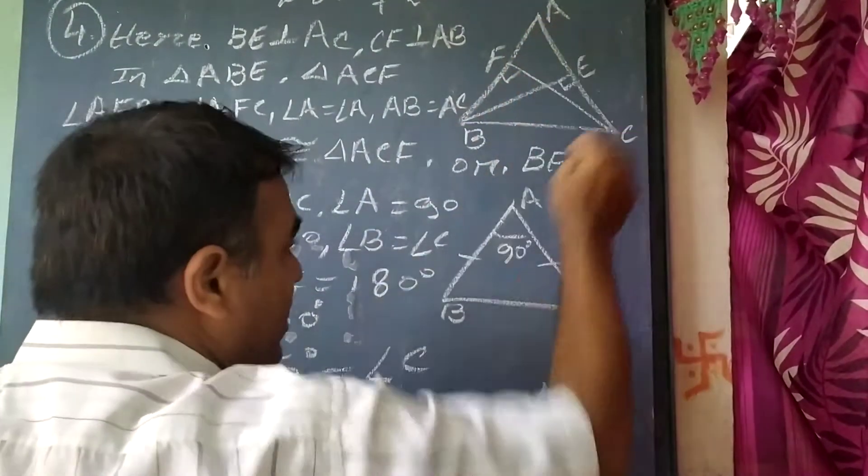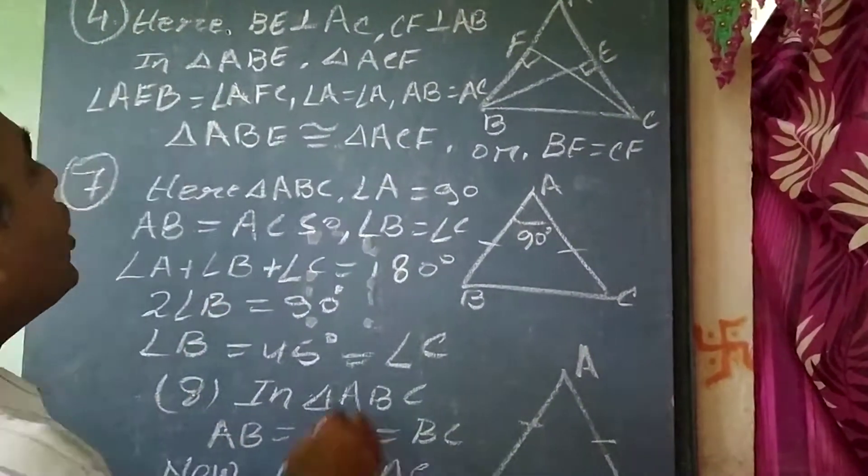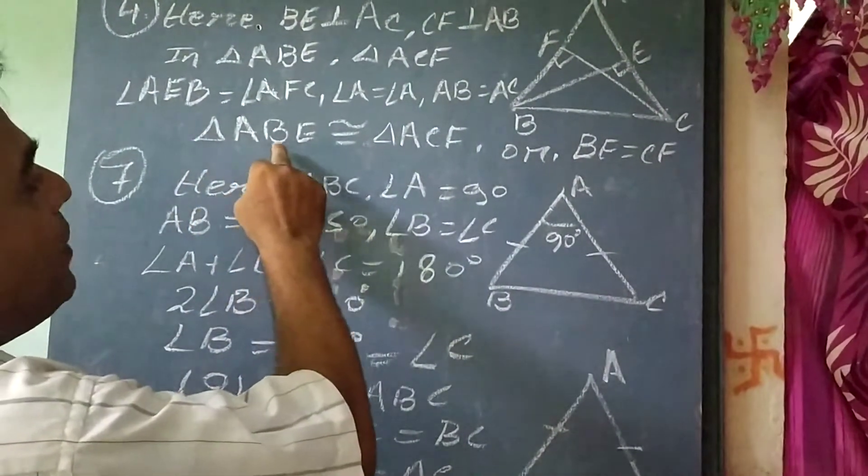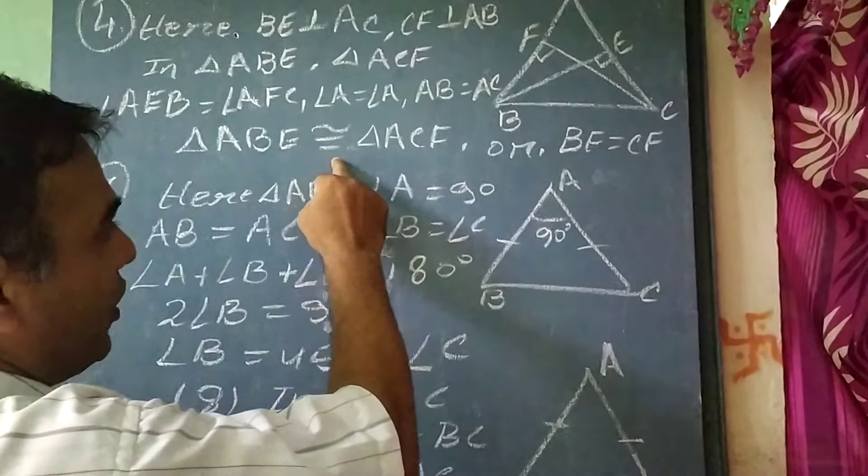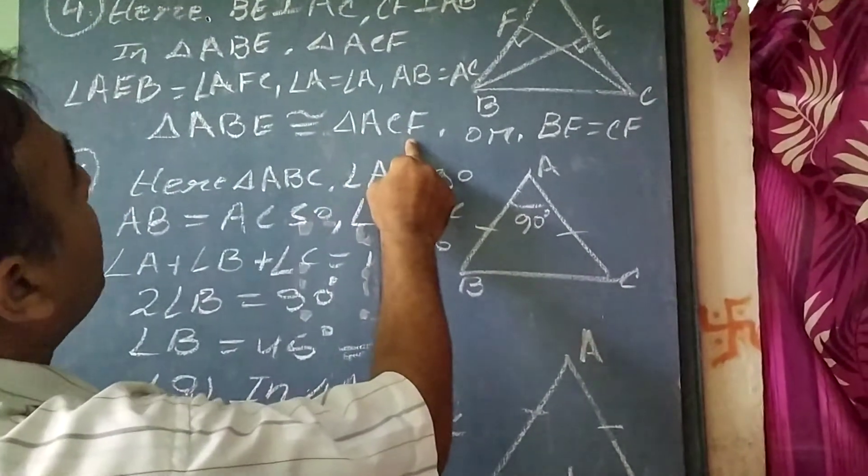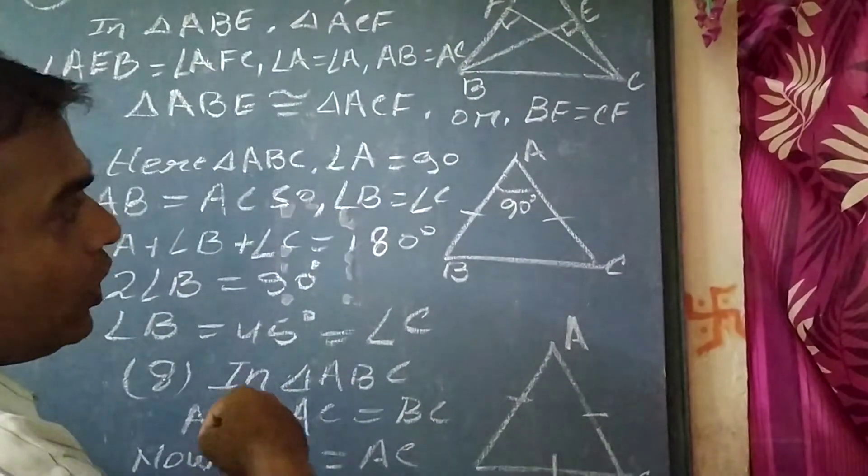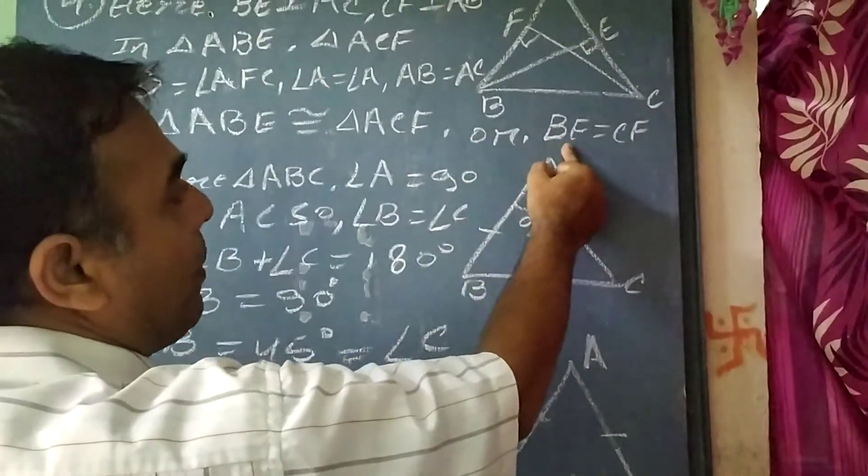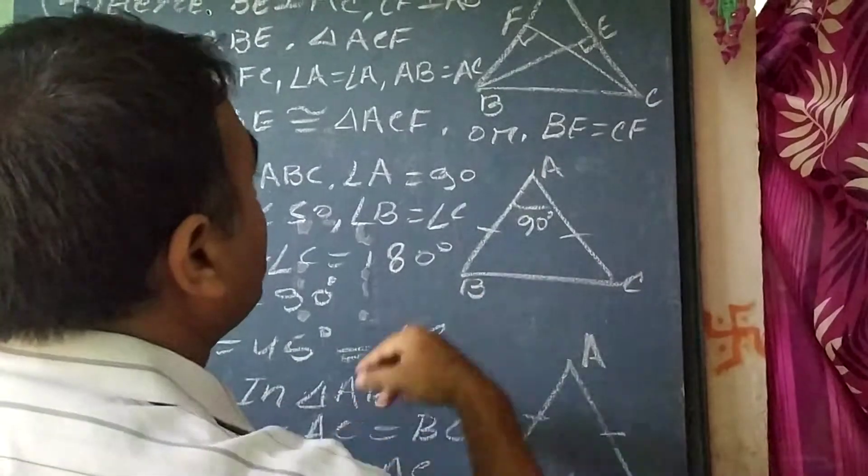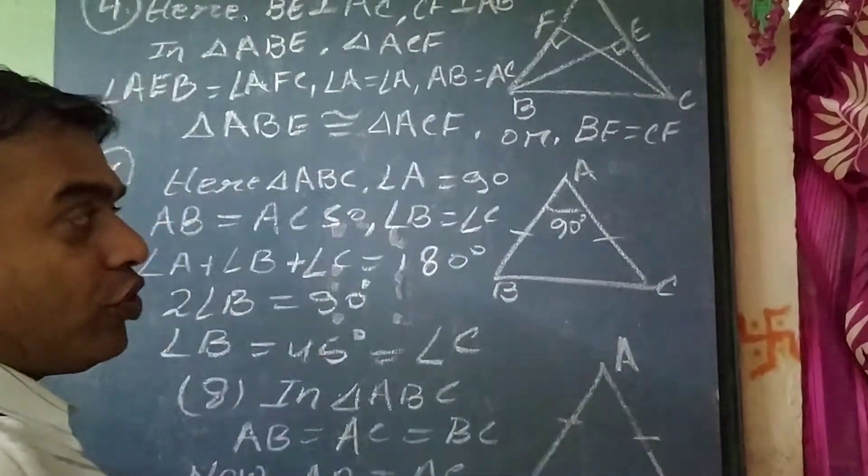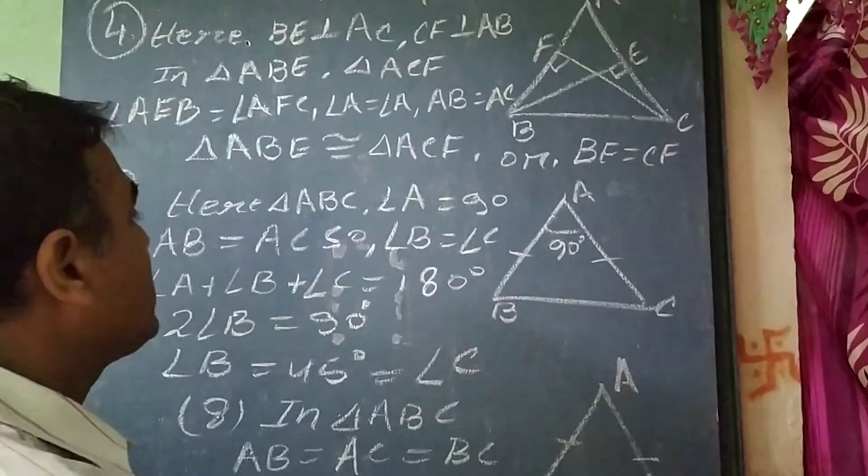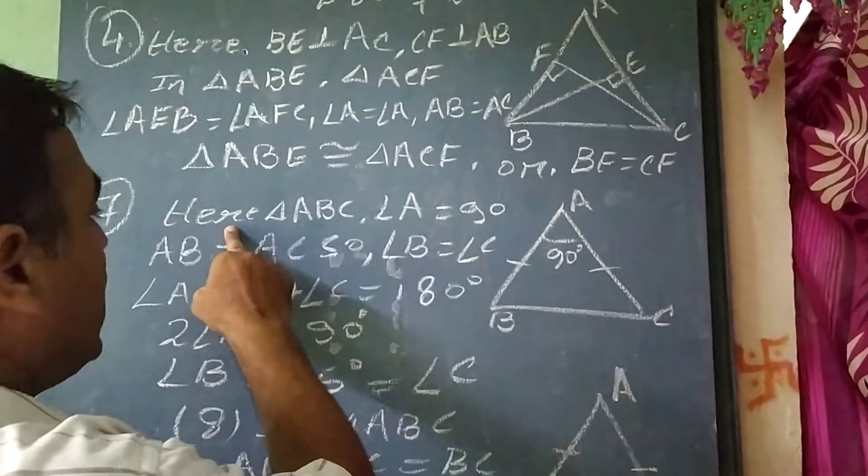So triangle ABE is congruent to triangle ACF by congruence property, that is AAS. So we can write BE equal to CF by the corresponding parts of congruent triangles. Now here question number 7.